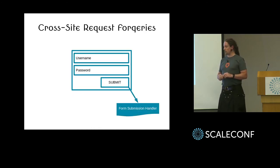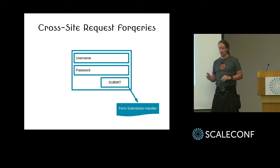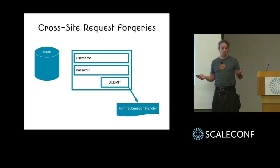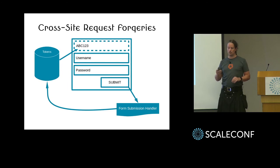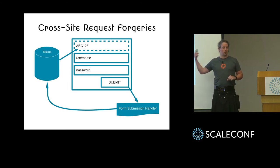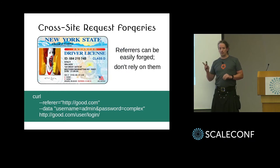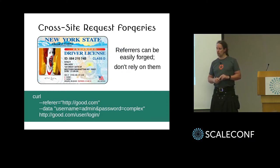Cross-site request forgeries — how do we block those? A lot of frameworks will handle this for you. Essentially, we have tokens generated and stored in the back end. We generate a token and stick it into a hidden field in the form, which gets submitted back through the form submission process, checked off against the list of tokens. This means if a third-party system is trying to hit your site, they're not going to have that token and won't be accepted. Don't trust referrers — they can be forged. And consider unusual attack vectors.